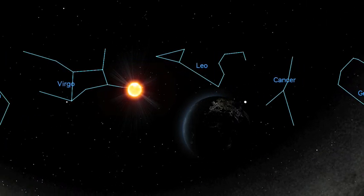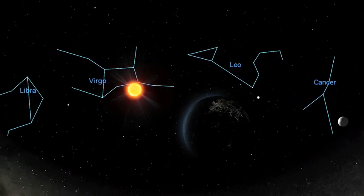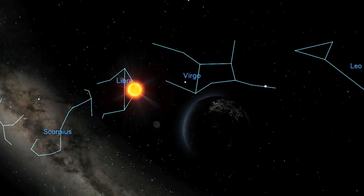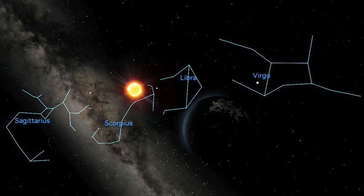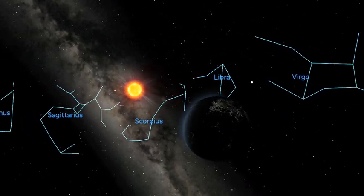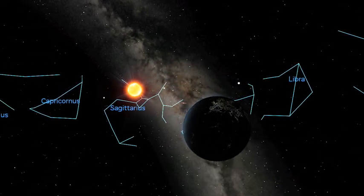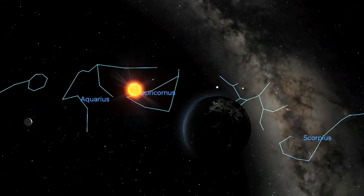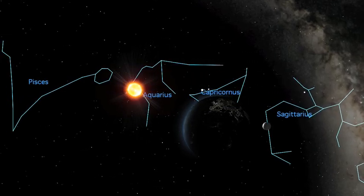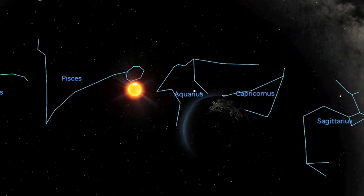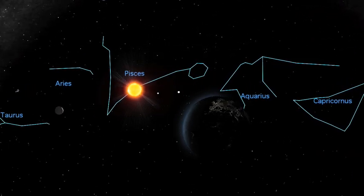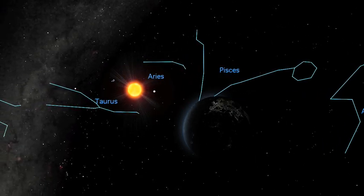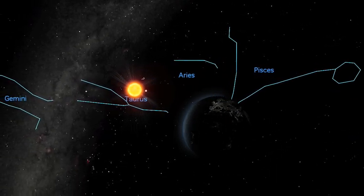Well, one way, called a sidereal year, measures our orbit against the distant stars. As viewed from the Earth, our orbit causes the Sun to appear to move through the constellations of the zodiac on a path called the ecliptic. And when the Sun returns to its starting point, a sidereal year has passed.